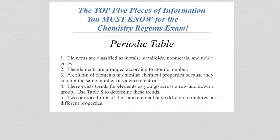Here are five pieces of information that you must know for the Chem Regents exam when it comes to the periodic table. First one, you have three, well, you have more than that, but you have classifications for elements.